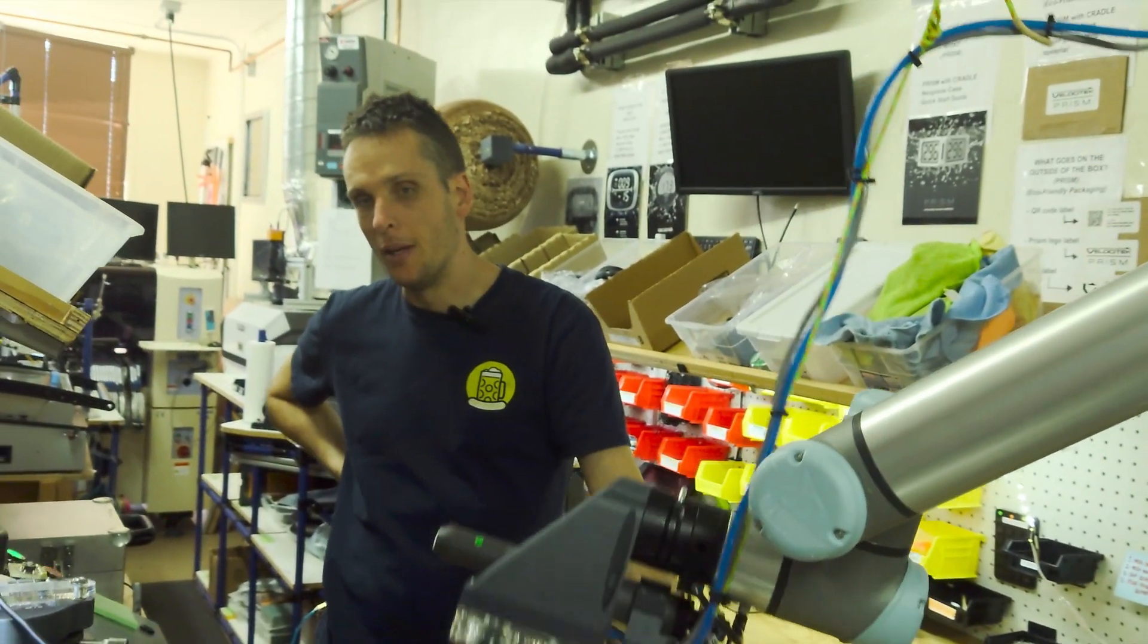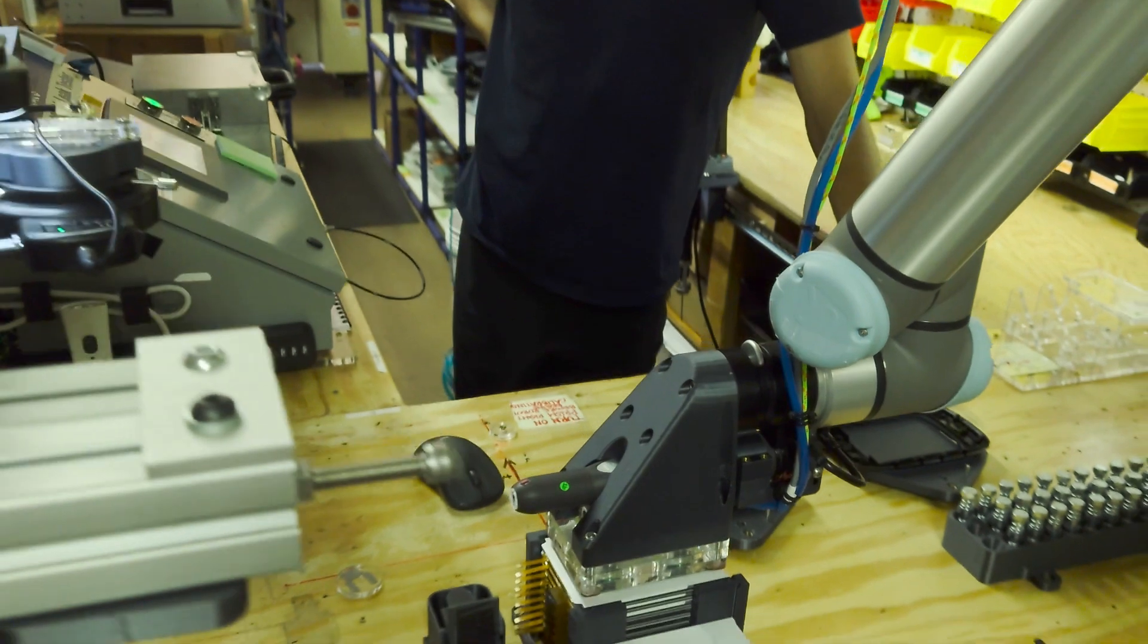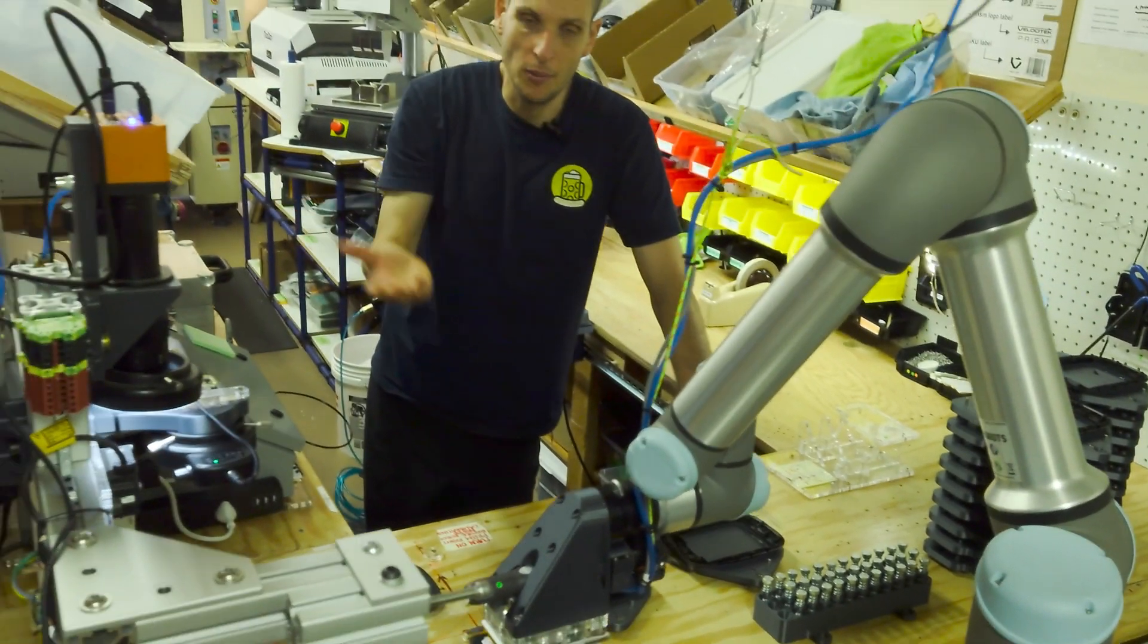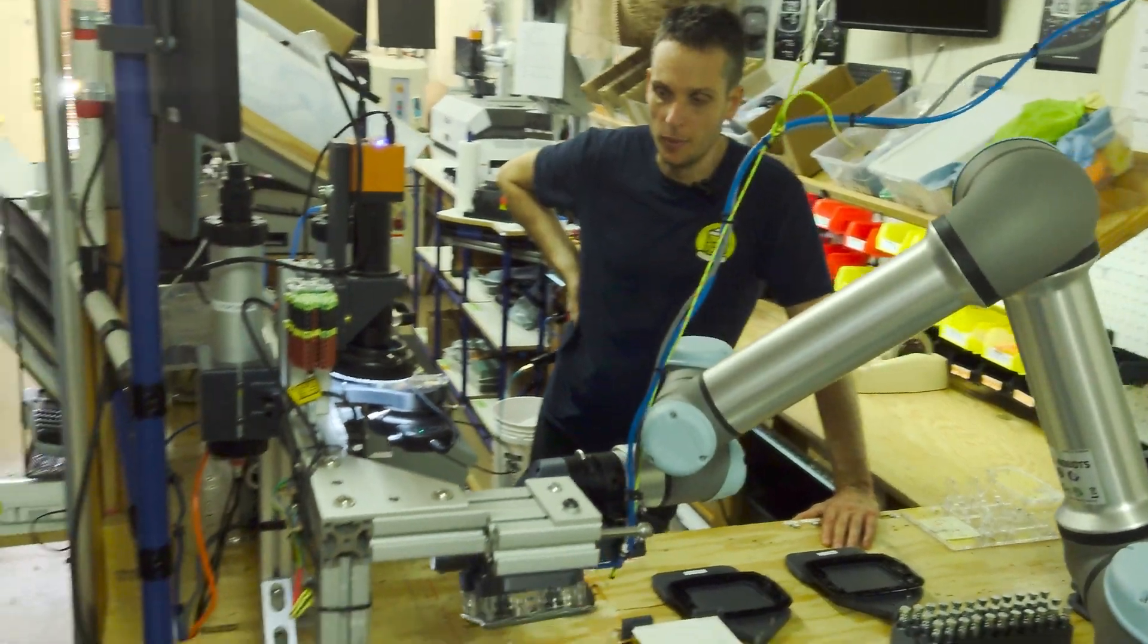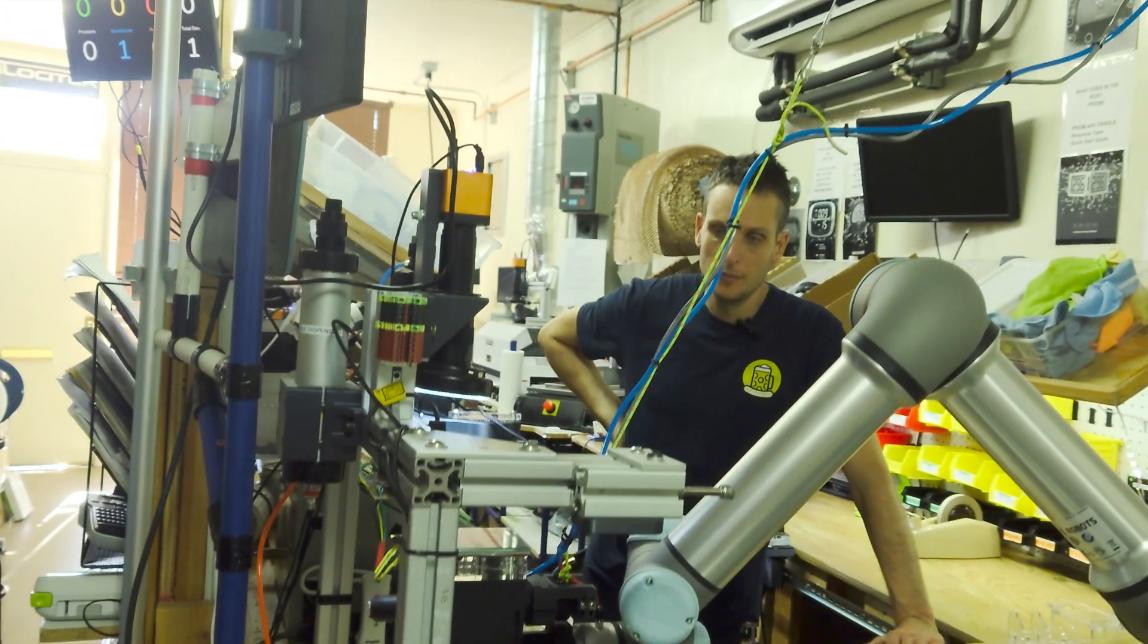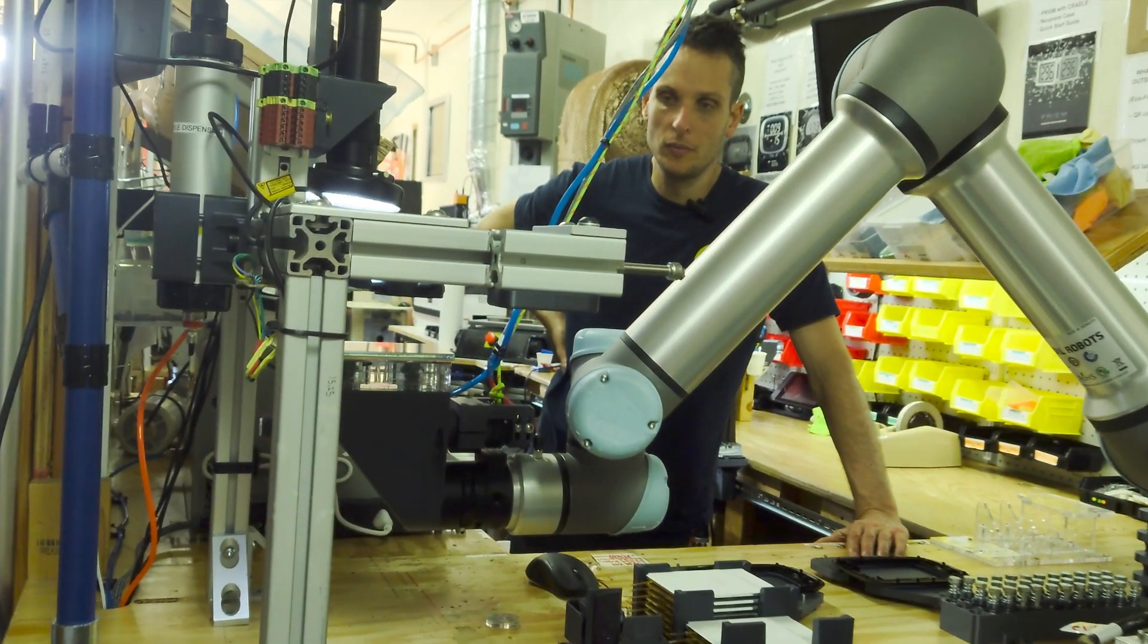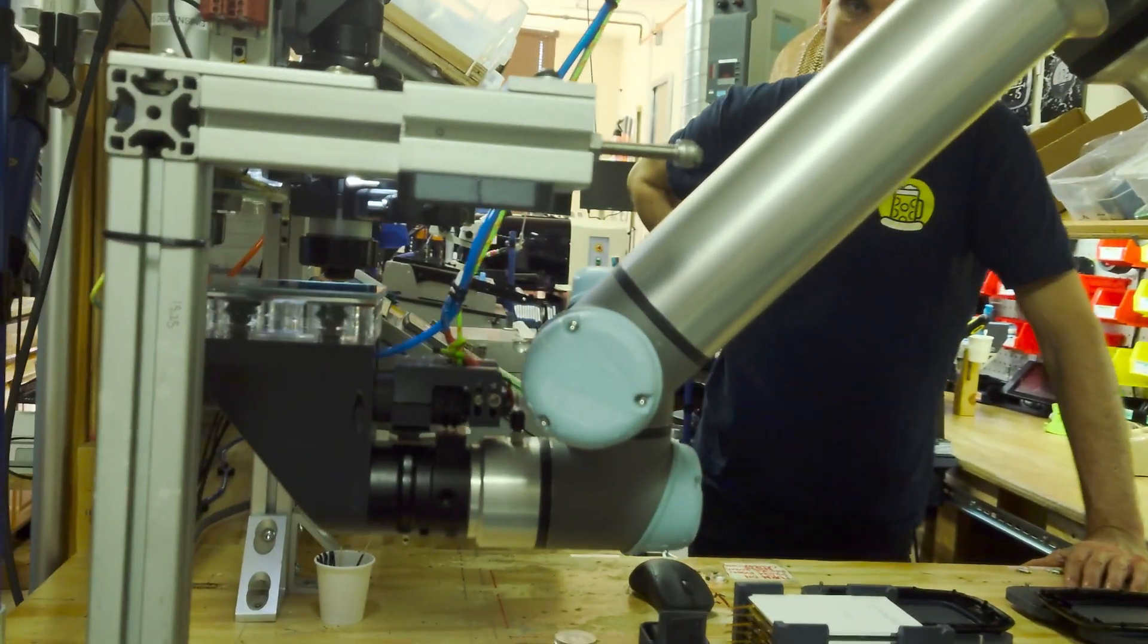Okay, so now the robot's supposed to pick up an LCD, and then it's going to use these sensors to exactly locate where the LCD is on the platter, and it's going to put glue on it.